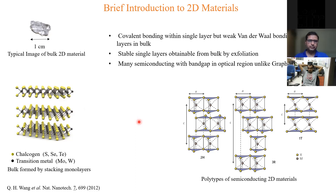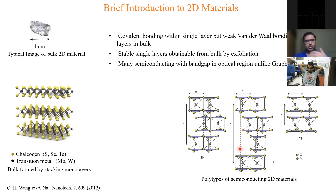Another important property of these materials is that they have no dangling bonds, so the single layers obtained are mostly stable at room temperature. Many of these two-dimensional materials have a semiconducting nature, giving them an optical band gap, unlike graphene.